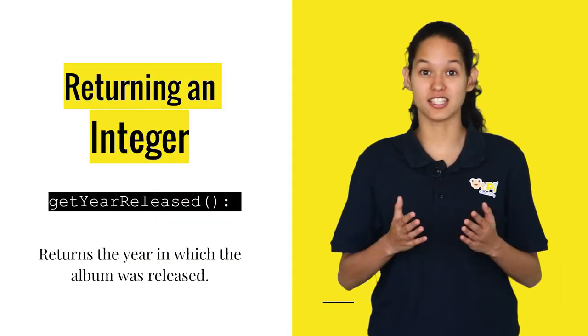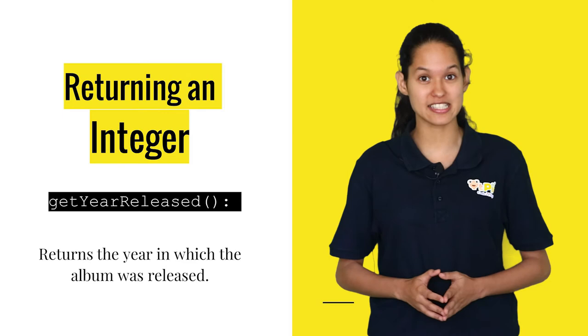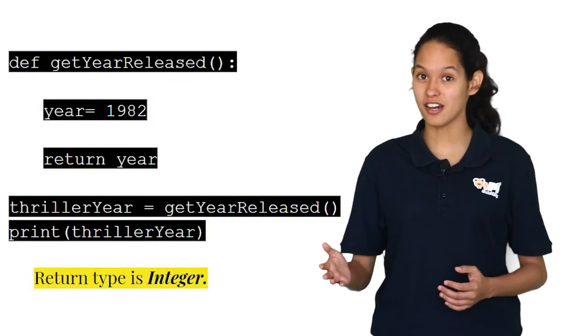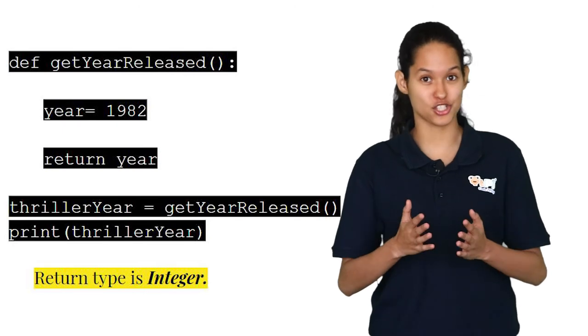Or if you're trying to get the year in which the album was released, you can call the function getYearReleased. Here the return type is an integer.